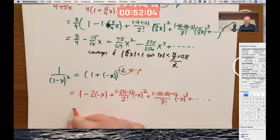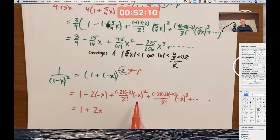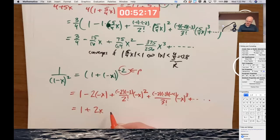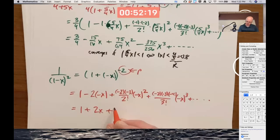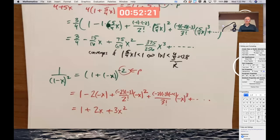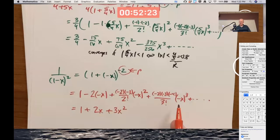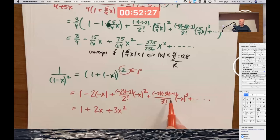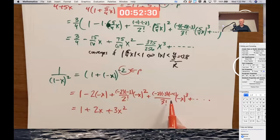Simplify. Get 1 plus 2x. Look at this term here. Negative x quantity squared is just the same as x squared. Negative 2 times negative 3 is positive 6 divided by 2 factorial. 6 divided by 2 is 3. Here, negative x cubed is negative x cubed, but then we have three more negative signs, three more negative numbers that are being multiplied. So I actually still get a positive.